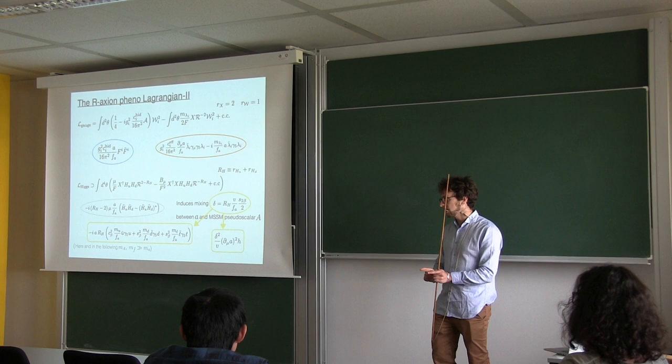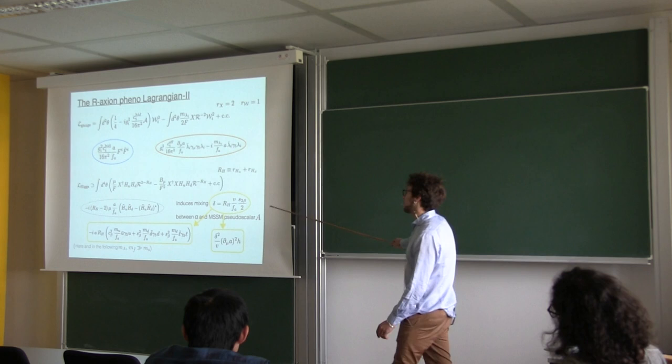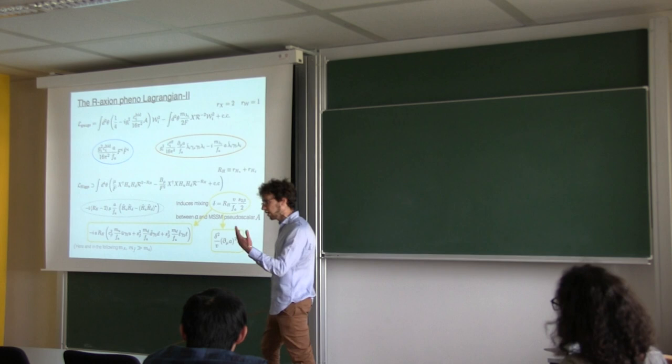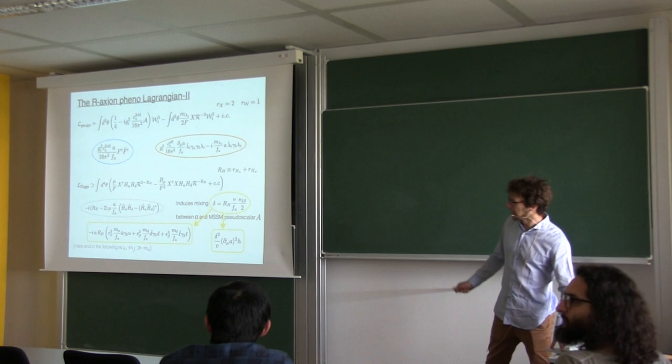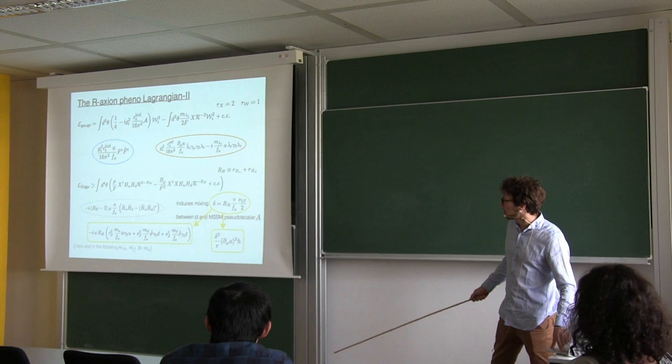Unlike for the case of the MSSM pseudoscalar, here you cannot have big enhancements of this coupling by going to extreme tan beta regions. Also, this induces a coupling between the Higgs boson and two R-axions, so that if the R-axion is lighter than the Higgs boson mass, you can have the decay of the Higgs boson to two R-axions. And here, and in the following, for simplicity, I will consider the masses of the sfermions and the other MSSM Higgs to be decoupled, meaning from the LHC reach. But they can go back in the game—I have a backup slide on that.